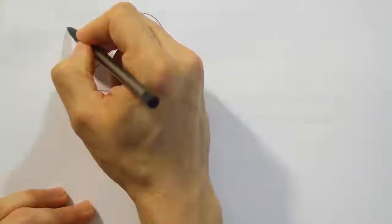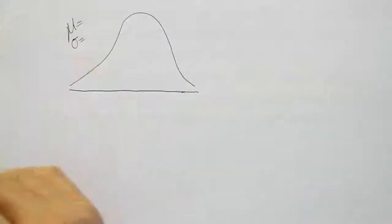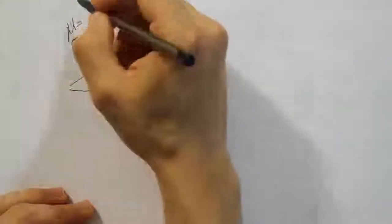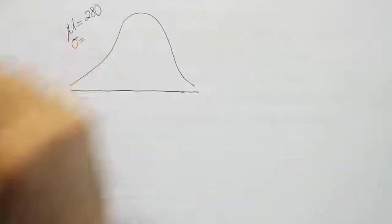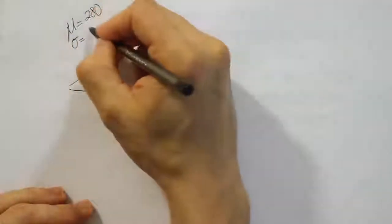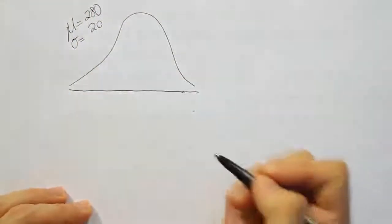I'm going to label the mean and the standard deviation they gave us in the problem. So they had said that the mean was 280 days and they said that the standard deviation was 20 days. So that's the information they provided us in the problem.